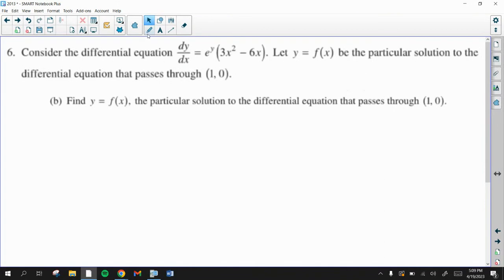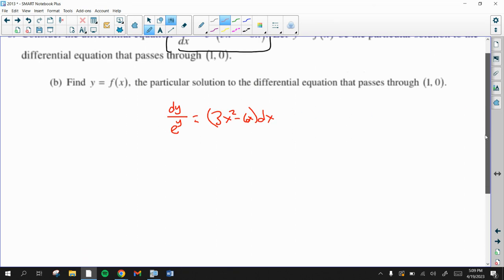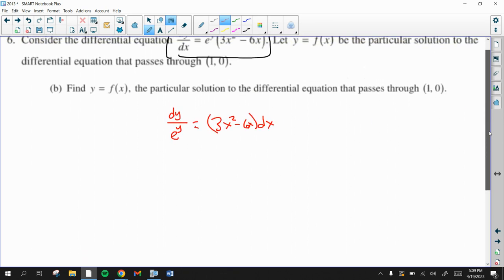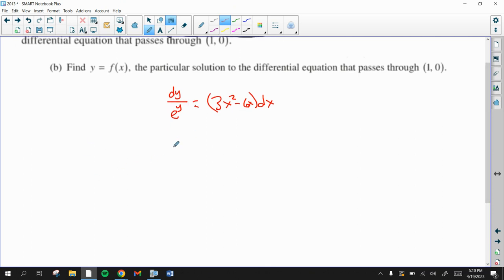We're going to first separate the variables. So we're going to take this equation and we're going to put all the y's on the left. So dy over e to the y equals 3x squared minus 6x dx. Now just be very careful here. Double check your integrals after you do them. I don't like the e to the y on the bottom. I'm going to make this e to the negative y dy.